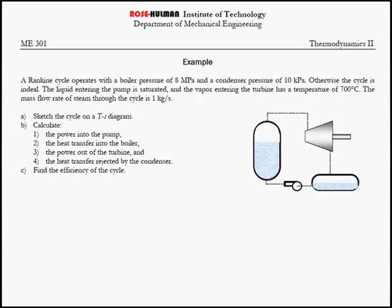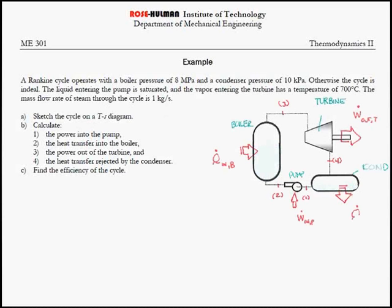So let's start with the TS diagram. To make this a little bit easier, what we're going to do is label the following points around the cycle. We're going to make the inlet of the pump 1, the exit of the pump 2, and so on around the cycle.